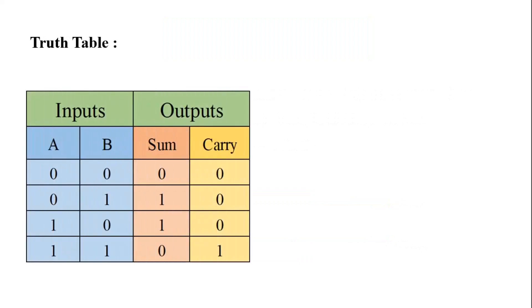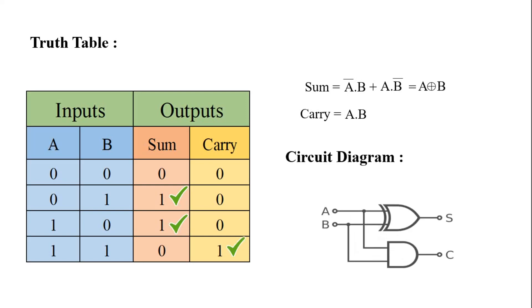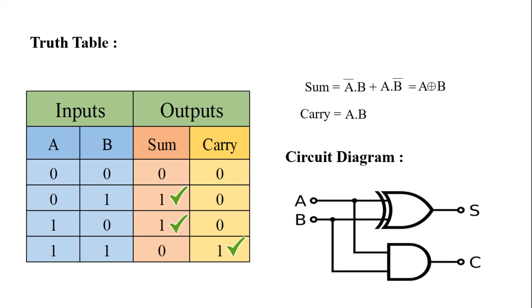This is the truth table of half adder. From this truth table we can directly get the expression of sum and carry in the form of sum of products. So carry is equal to A dot B. For the half adder circuit we need one EXOR gate and one AND gate.